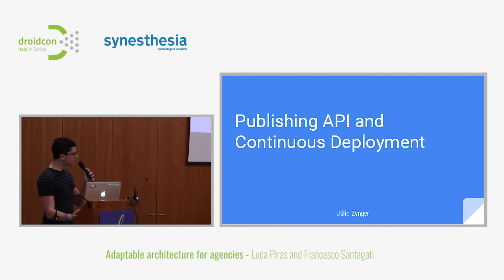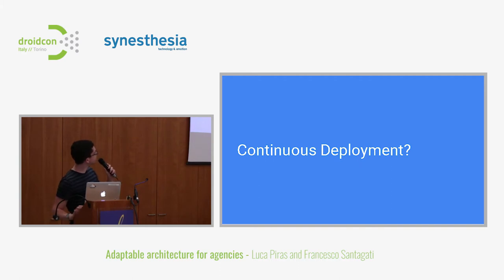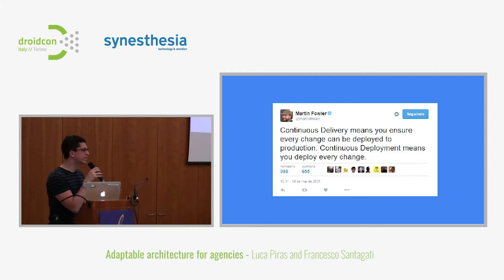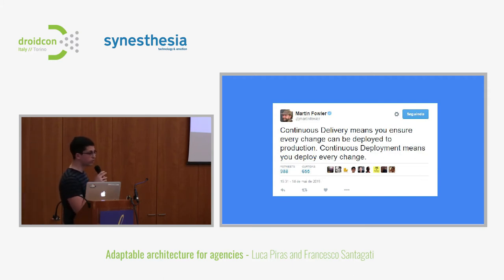Before I go into the publishing API, I'll talk about continuous deployment. I'm going to throw Martin Fowler at your faces to begin with. What's the difference between continuous delivery and continuous deployment? We see these terms all over the place. The main difference is that in continuous delivery, you are ready to push your changes to production; in continuous deployment, you actually do it.